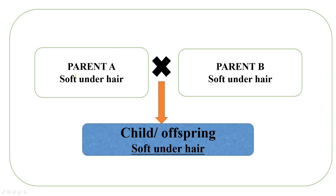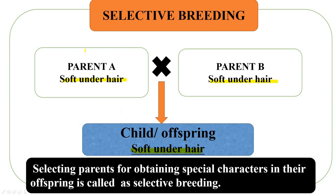The fine soft hair close to the skin of the sheep is used for making wool fibers. Some sheep breeds only have soft under hair with no coarse beard hair. What we do is cross two parents that both have soft under hair, so their offspring also has only soft under hair. This is called selective breeding — we specifically select parents to obtain a special character in their offspring.